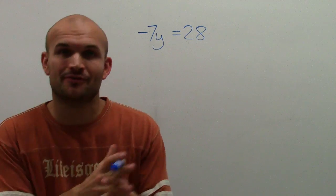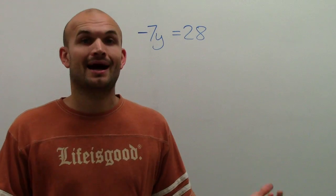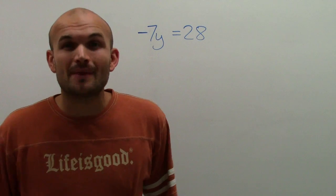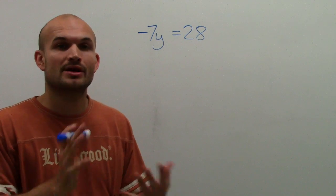I know it's so easy for you to just look at this and say negative 7 times what number y equals 28. You could probably do this in your head, but if you can, please just follow these steps. I'll try to make this really quick.